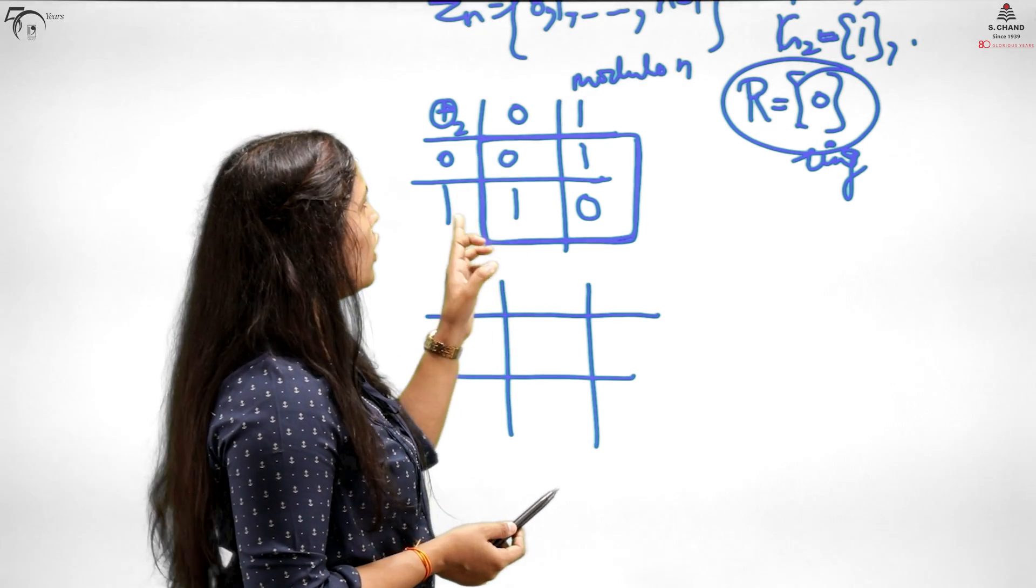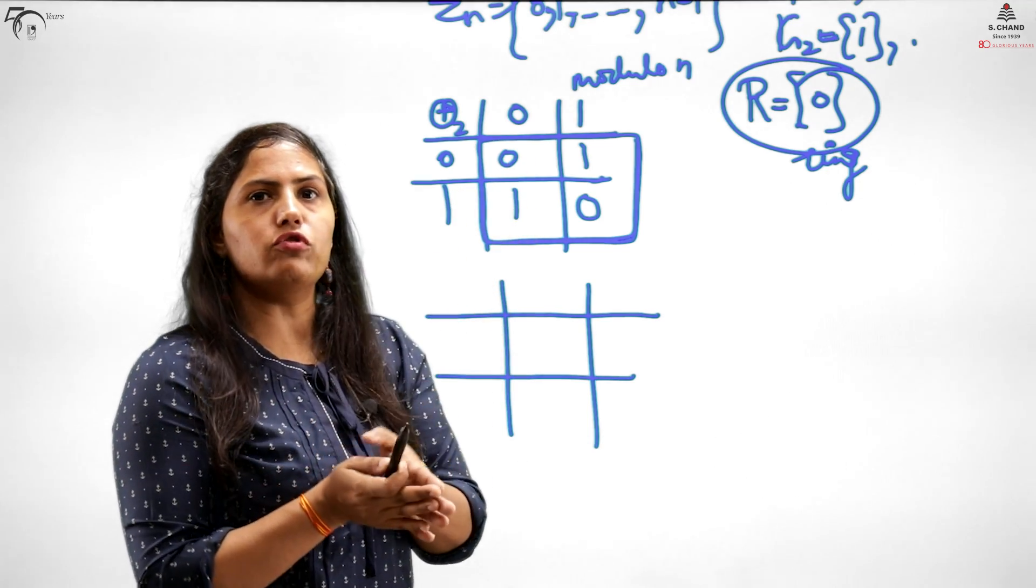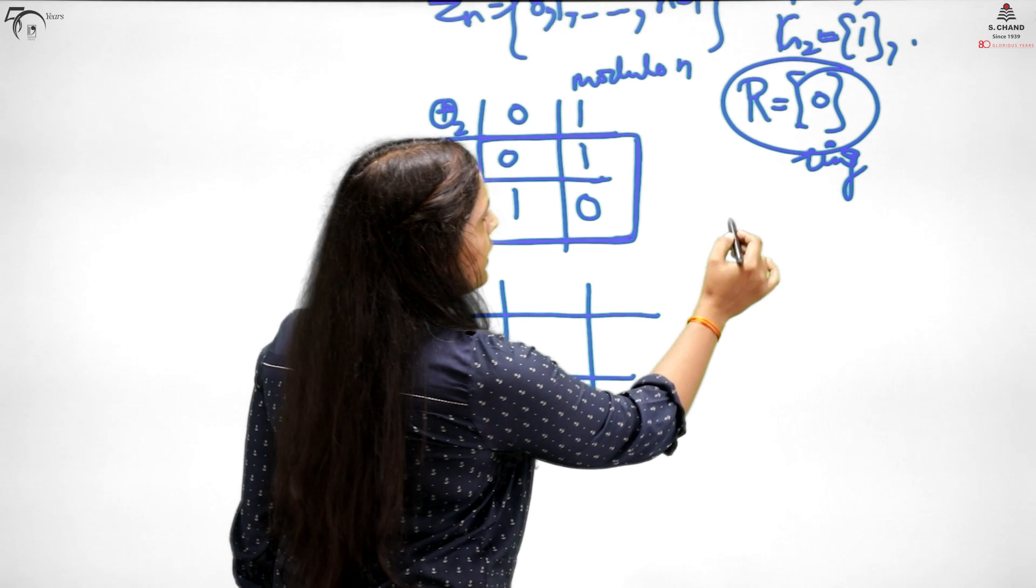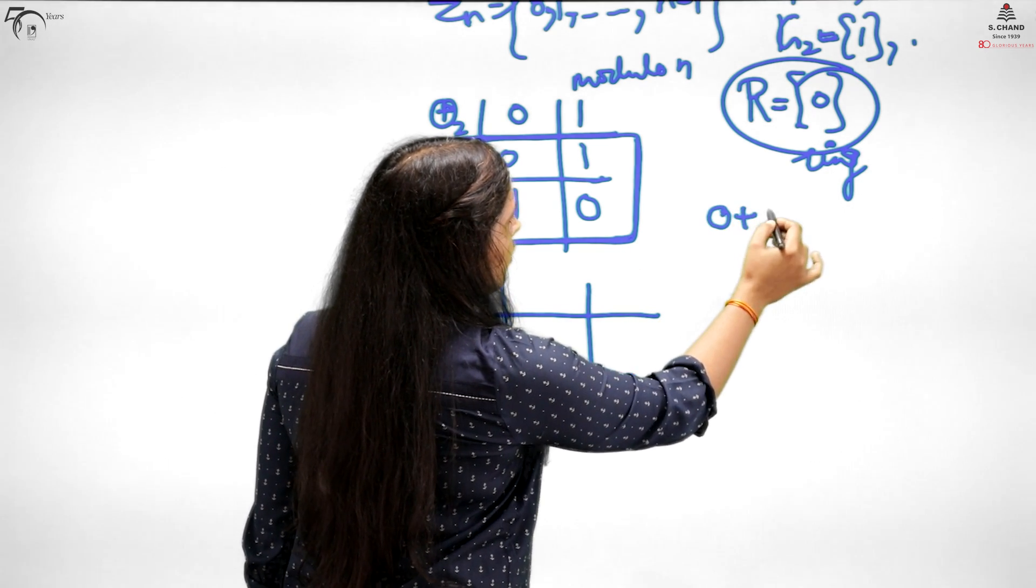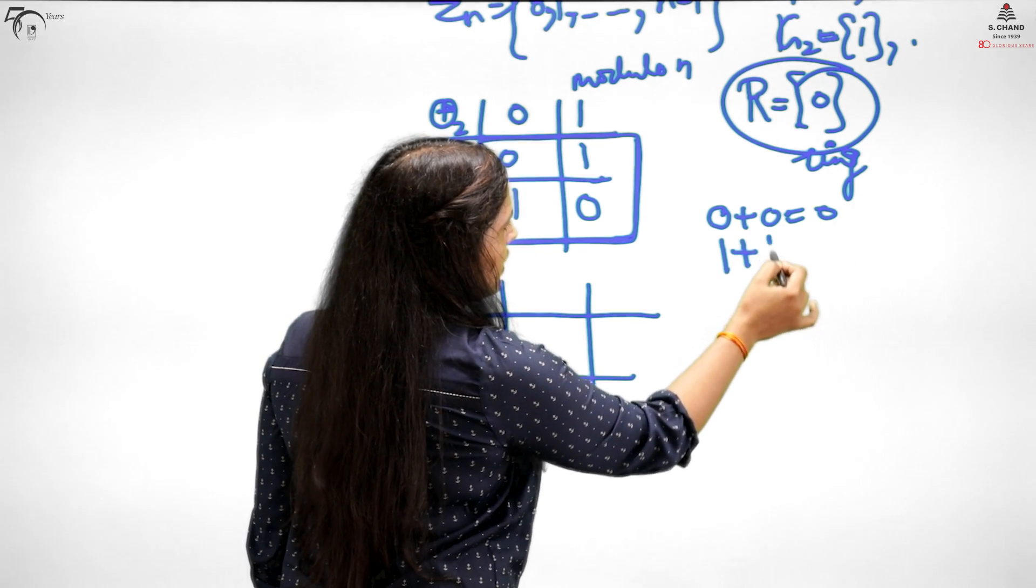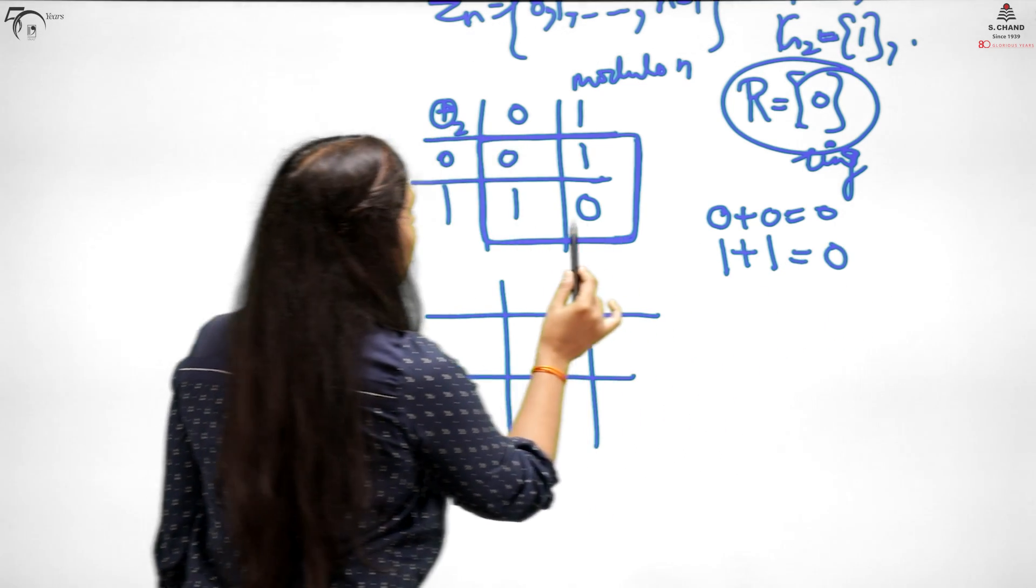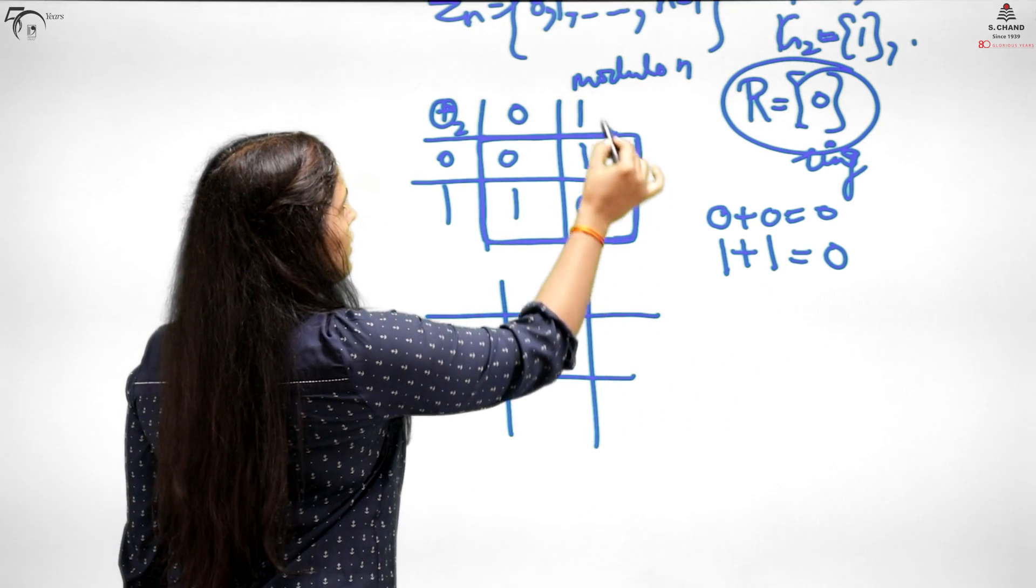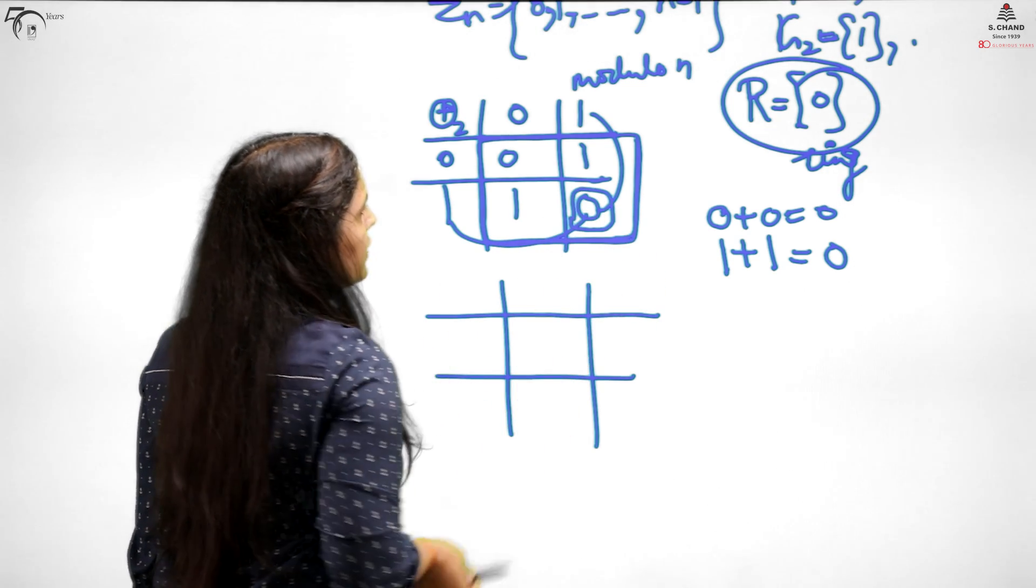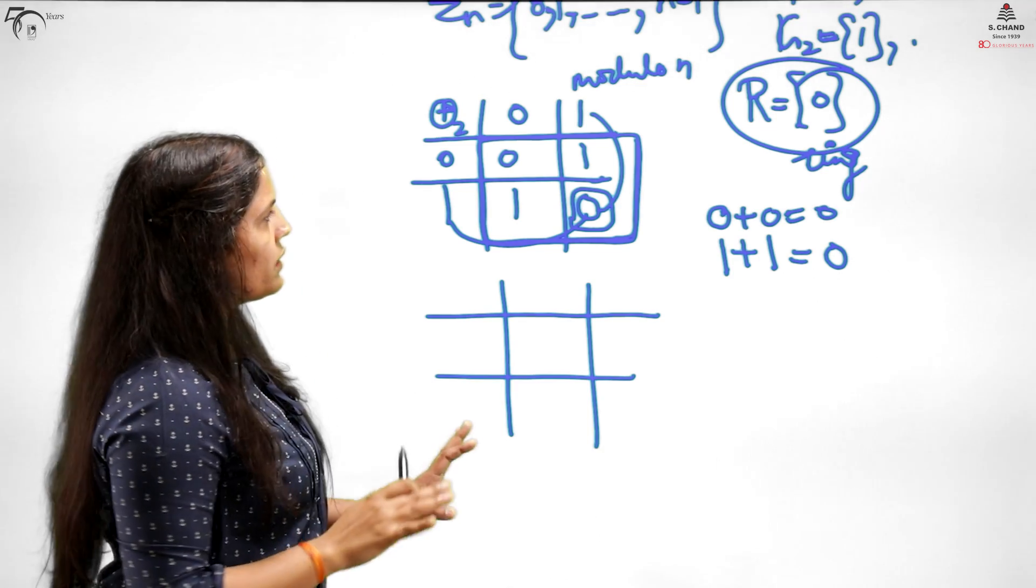The additive identity you can see is 0, which is unique. And with respect to 0, the inverse also holds. Inverse is a bit different. Can I tell you what is the inverse of 0? Obviously 0, because 0 plus 0 is 0. The inverse of 1 is basically 1, because when you add 1 to 1, you get 0. From the table you can find this out.